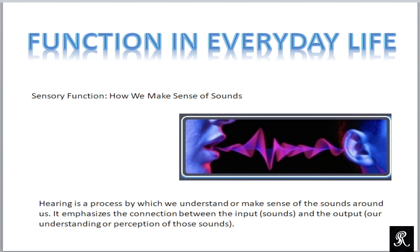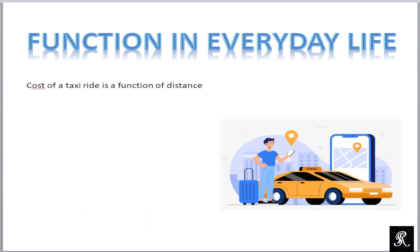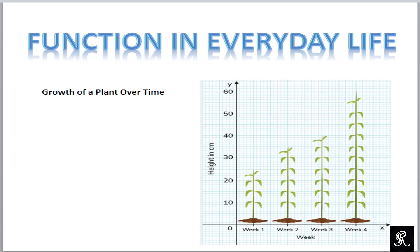Hearing is a process by which we understand or make sense of the sounds around us. It emphasizes the connection between the input sound and the output understanding or perception of those sounds. Similarly, we have another example that cost of a taxi ride is a function of distance. Because whenever you hire a cab, the cost or charges will depend on the destination, where you have to go, how far your destination is. If you have to go far, you have to pay more. If your destination is nearby, you pay less. It means the cost depends on how far you have to travel, what is the actual distance you have to cover.